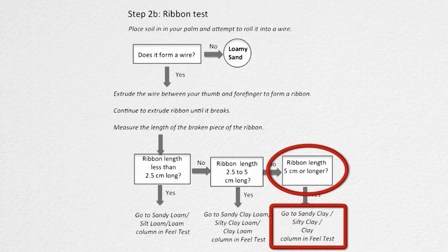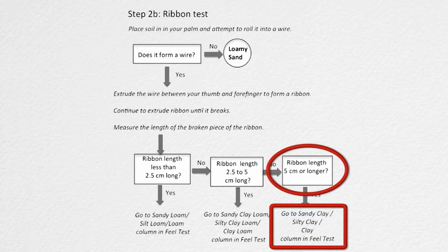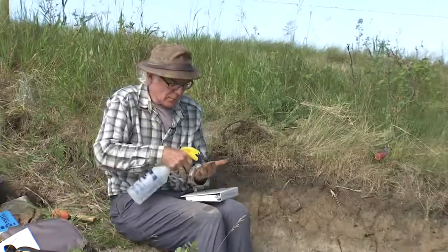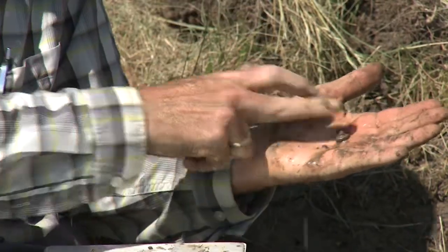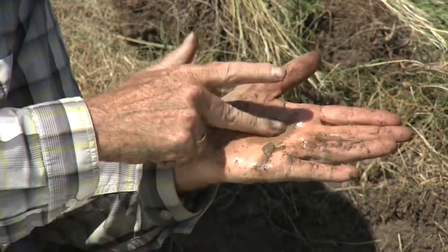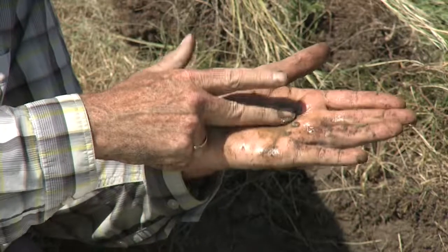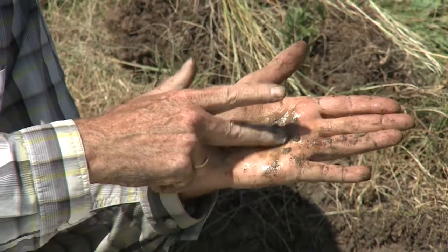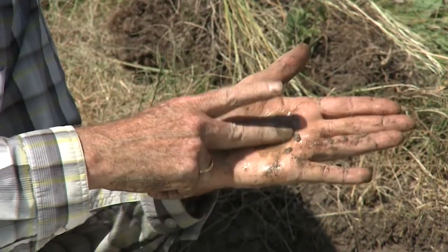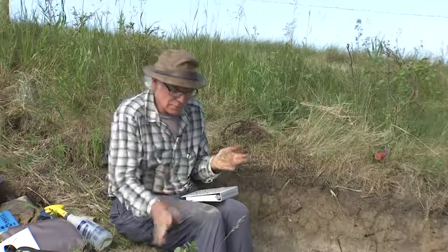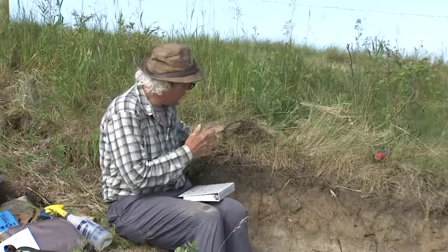A ribbon of five centimeters or above takes me to the column that includes sandy clay, silty clay, and clay. I clean my hand, put a small amount in for the field test, saturate it, and feel for gritty, smooth, or neither. Once again I'm feeling lots of grit, so I'm going to say it's very gritty — and that would classify as a sandy clay.